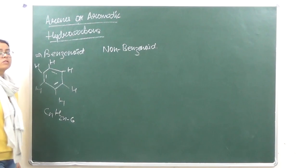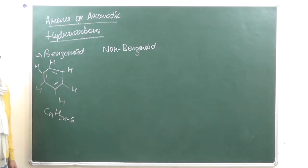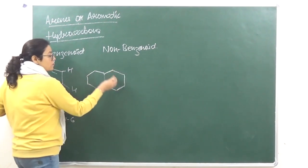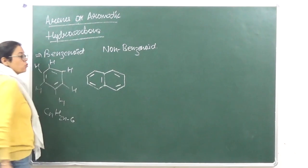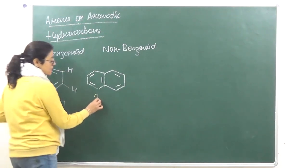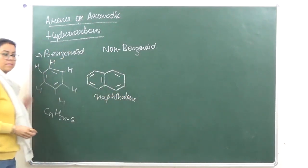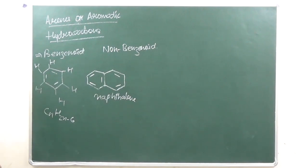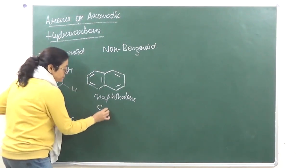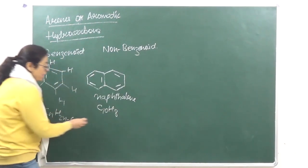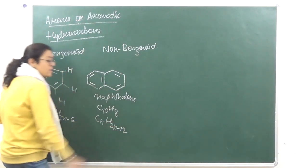Sometimes two or three benzene rings can be fused together. When two benzene rings are fused together, that structure is known as naphthalene.